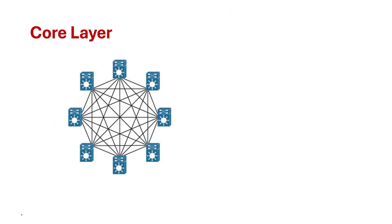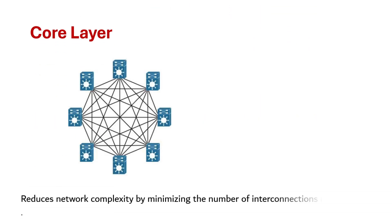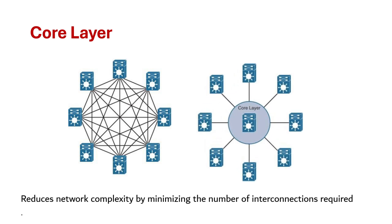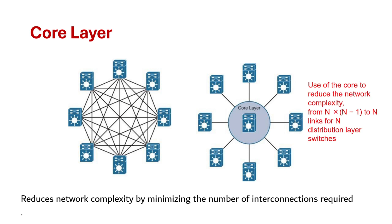As you can see, the core layer reduces network complexity from N×(N−1) to N links for N distribution blocks. In a full mesh scenario, from each router you would have connections totaling 1, 2, 3, 4, 5, 6, 7 — multiply that by the number of distribution nodes and you get a large number of links. But by using a core layer, the number of connections from each distribution layer switch decreases significantly — that is the key advantage of having a core layer.